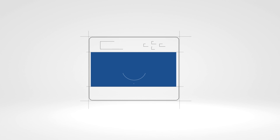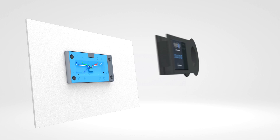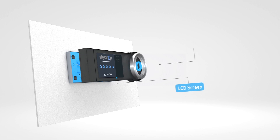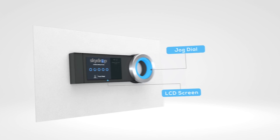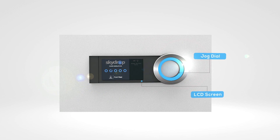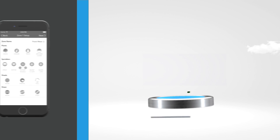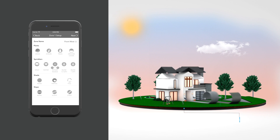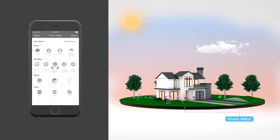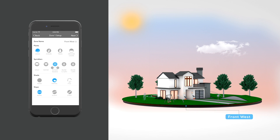During the installation, your technician will remove your old timer and connect SkyDrop to your existing sprinkler system. Don't worry, you're not going to miss that old timer one bit. Next, the technician will input important zone information that will be used to determine the optimal watering schedule for your landscape.